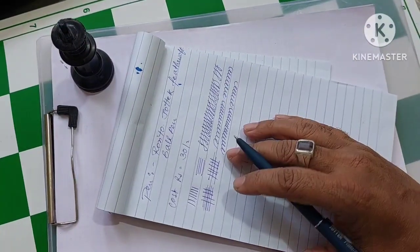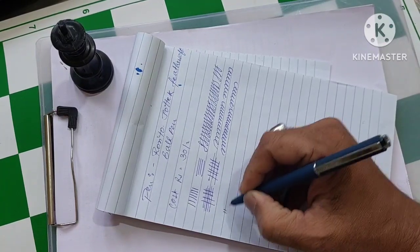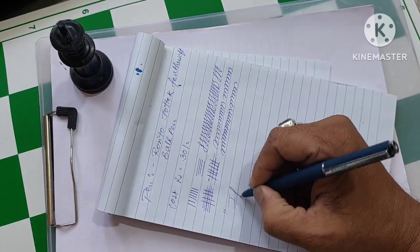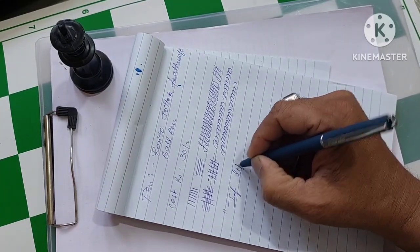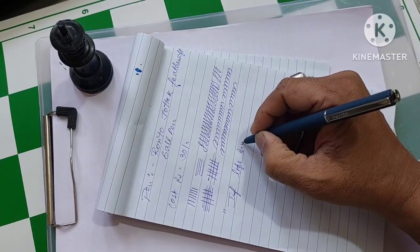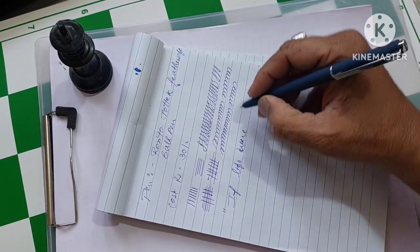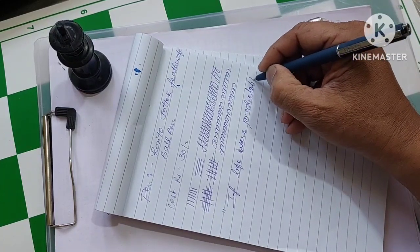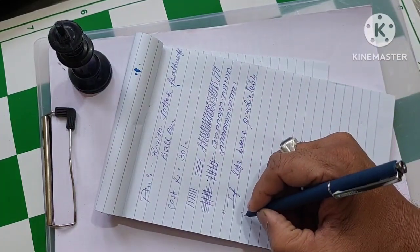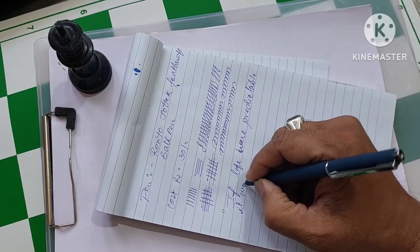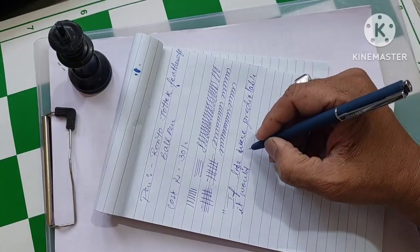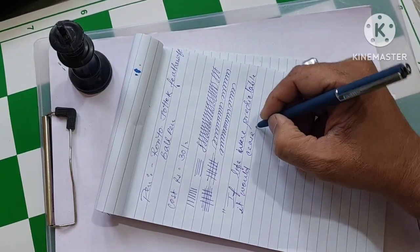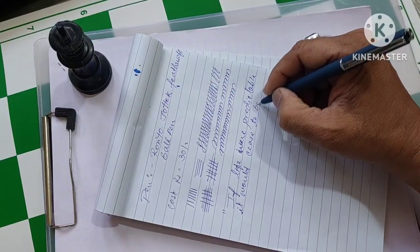Let's write a sentence and see with this, and I would like to write a quote. If life were predictable, it would cease to be life.